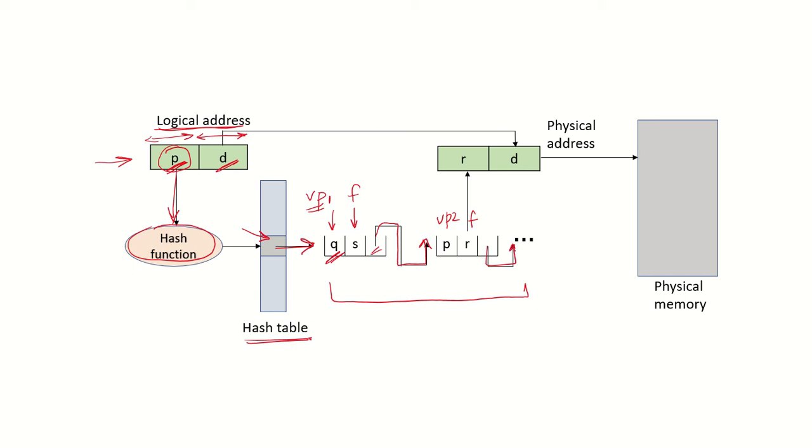Similarly, there will be a pointer pointing to the next element in line. All the virtual page numbers hashing into this location of the table will be linked to a chain of elements.